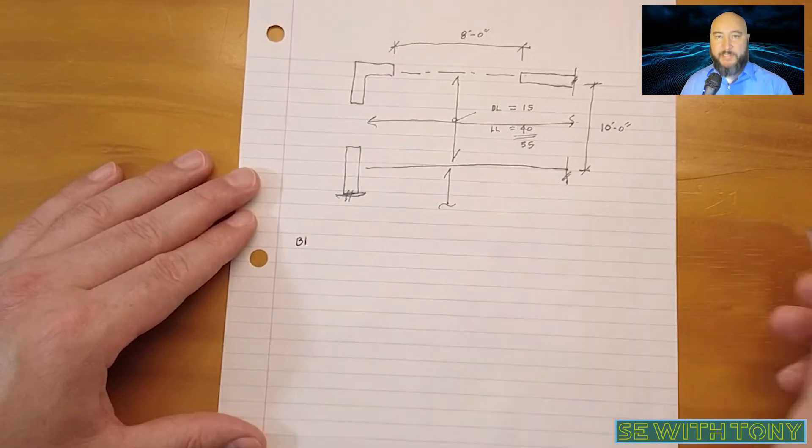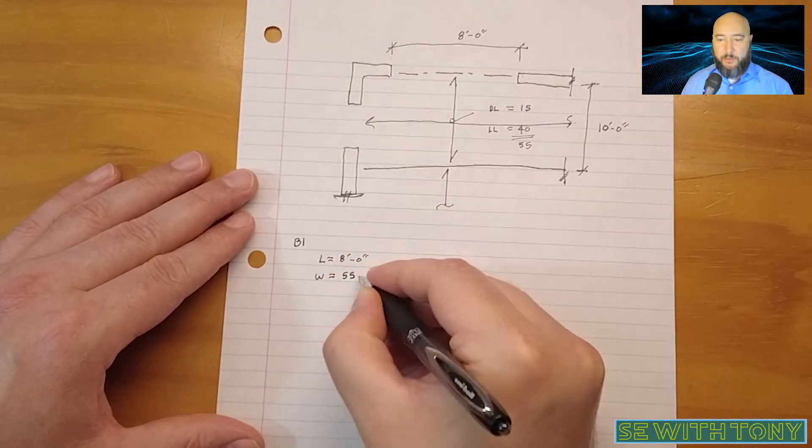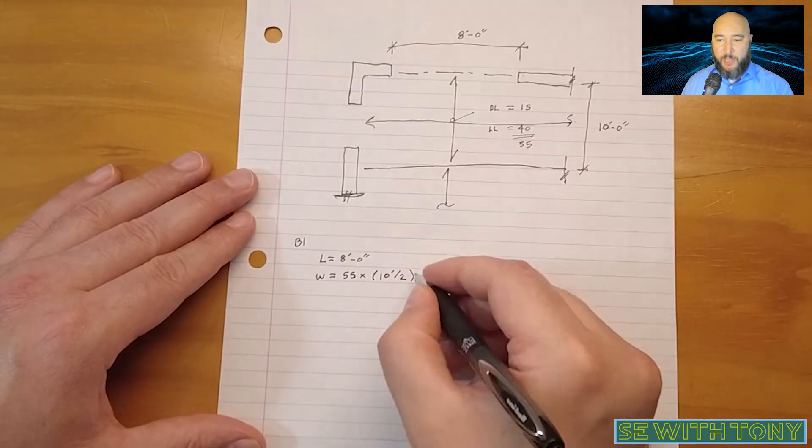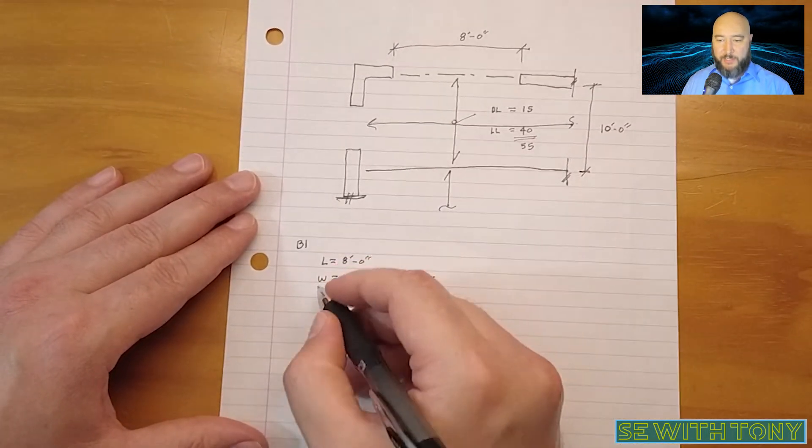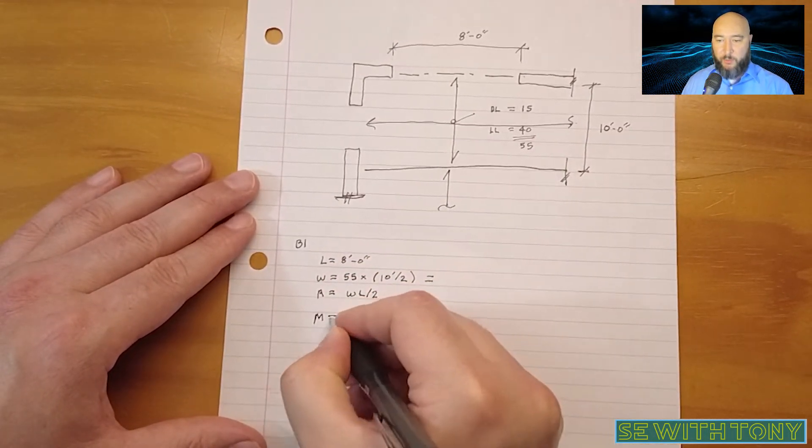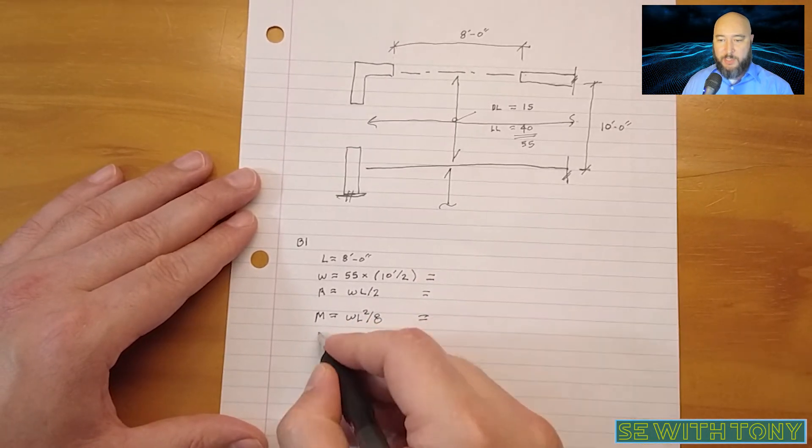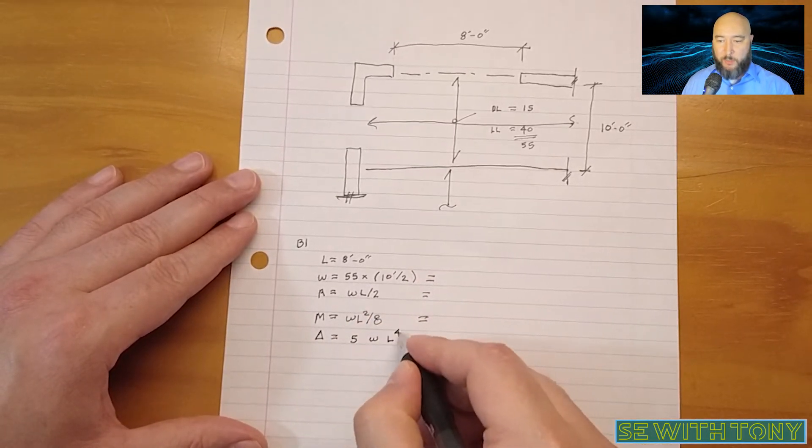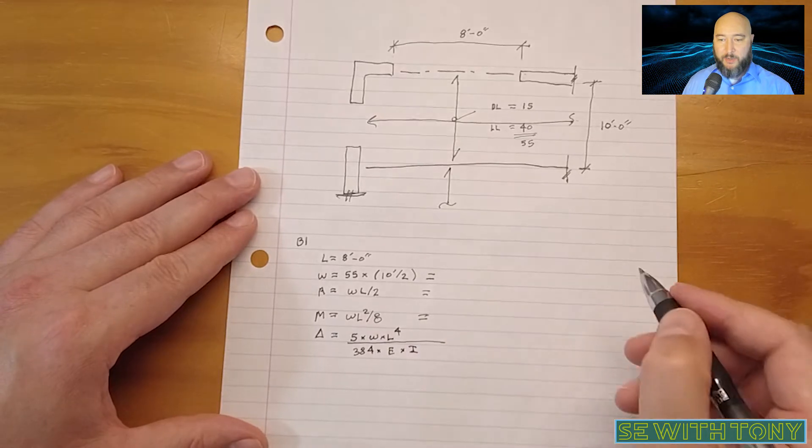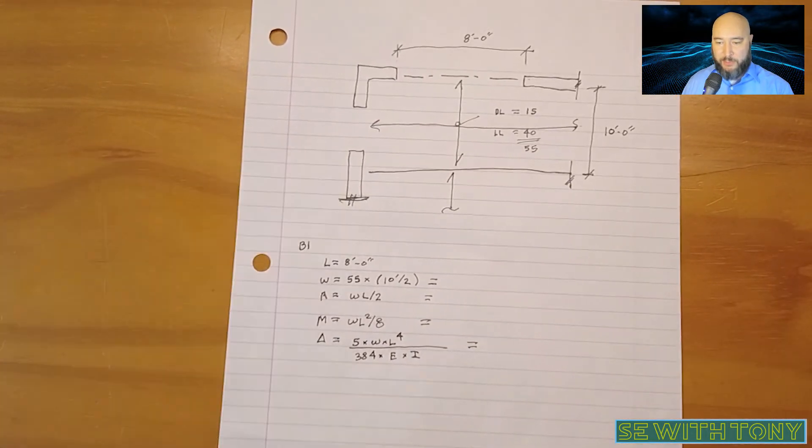Back to the design example, I'll write down the length of the header, the line load from the joist bearing on top of the header is 55 PSF times half of the joist length. The reaction is the line load times half of the header length, and the moment is the line load times the header length squared over 8, and the deflection is all of that.